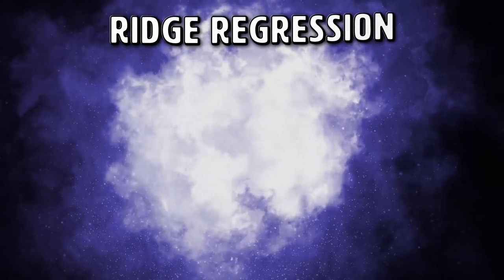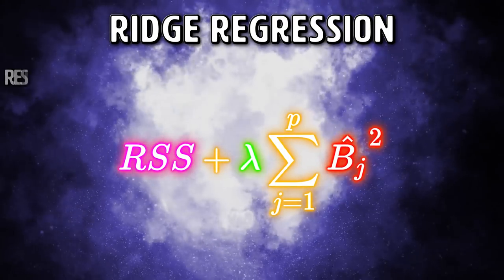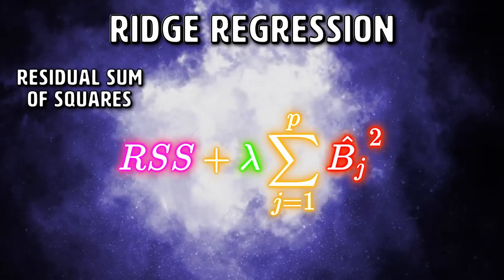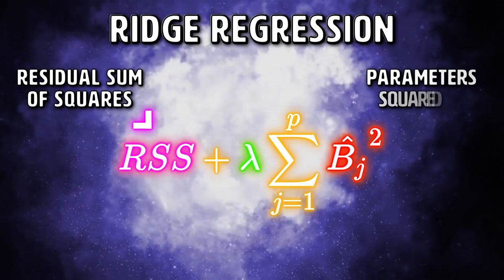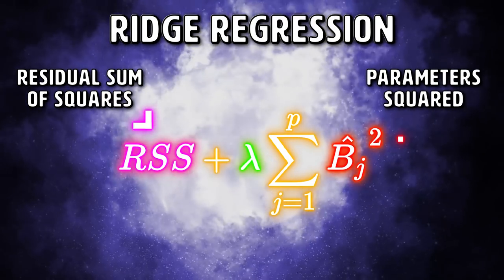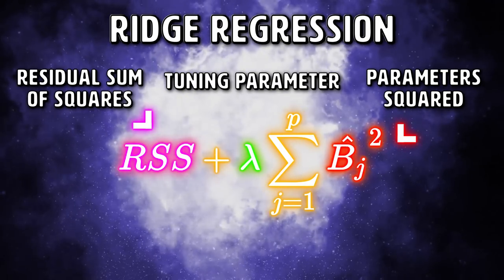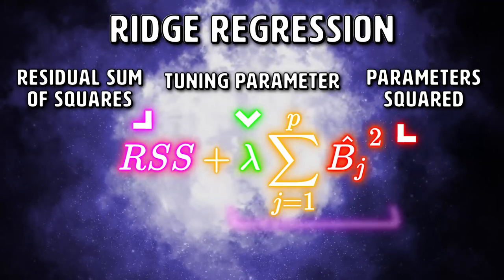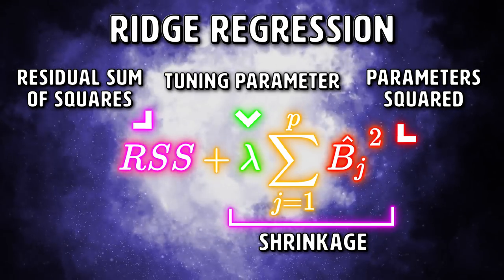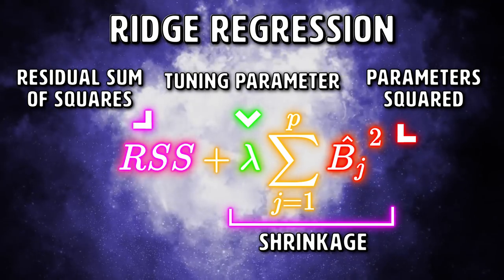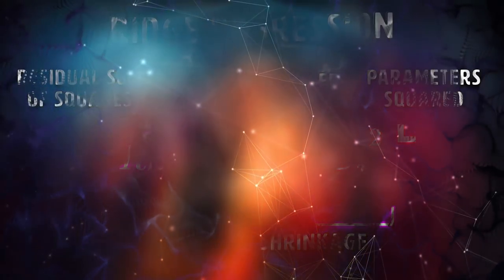We don't want that. So to solve this issue, ridge regression adds a small squared bias factor to the variables. This squared bias factor pulls the feature variable coefficients away from this rigidness. By introducing a small amount of bias into the model, it reduces the variance, which means the difference between predicted data points and the mean of y, immensely. This trade-off of variance and bias will produce much more useful coefficient estimates when co-linearity exists.